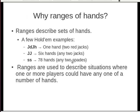So, why are we talking about ranges of hands? A range describes a set of possible hands. Here are a few examples: a pair of jacks where we know the suit, so there's only one hand possible; or any pair of jacks — there are six of those; or any hand with two spades — there are 78 of those. Ranges are used to describe situations where one or more players could have any one of a number of hands.